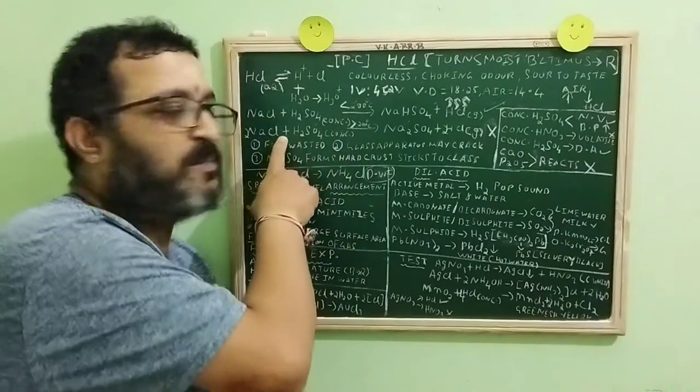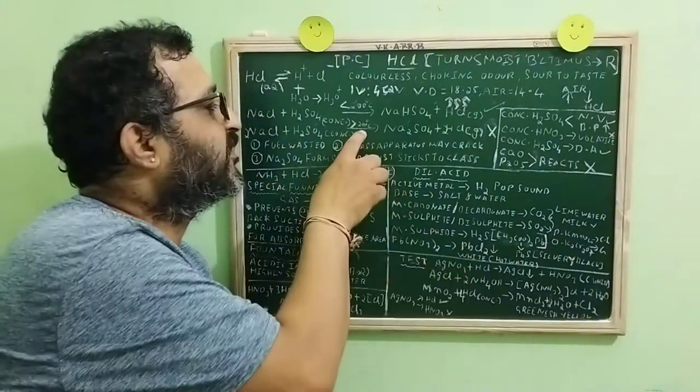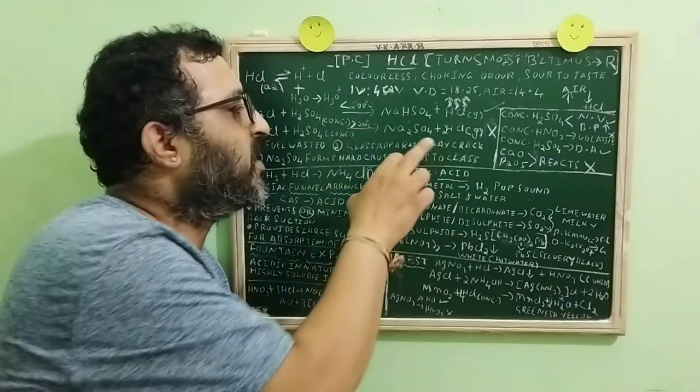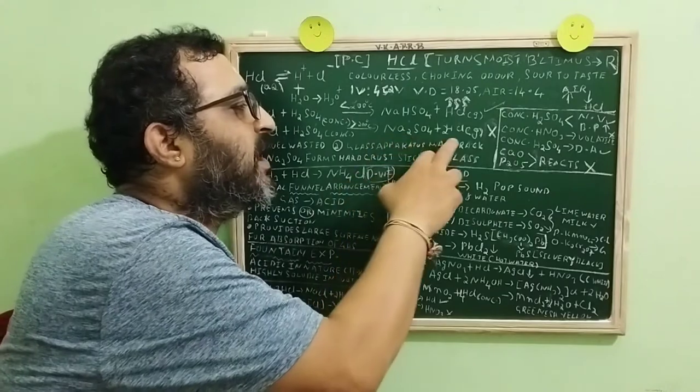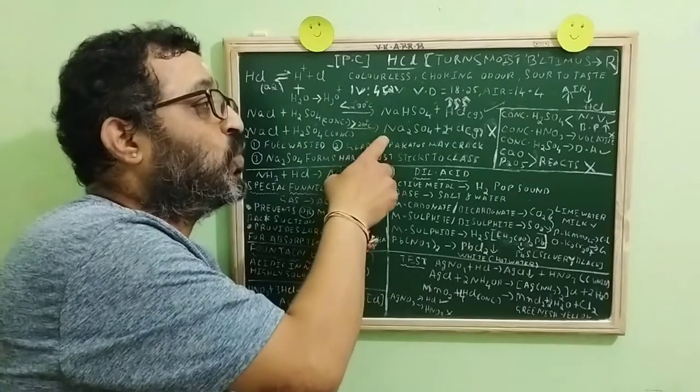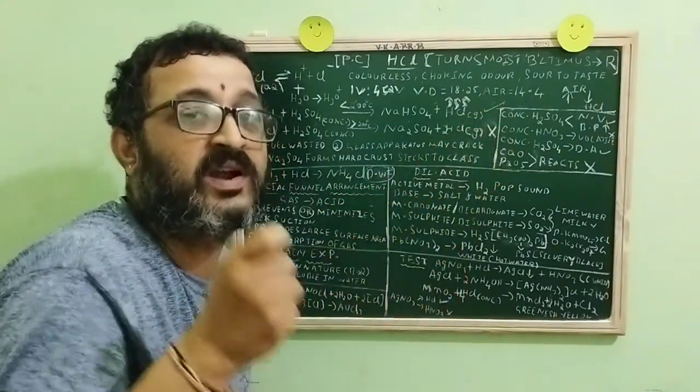Now, the same reaction when you perform, by keeping the same reactants, when you just slightly increase the temperature more than 200, you will get sodium sulfate and our product HCl. But out of these two, which is the preferred reaction? Definitely the temperature less than 200.